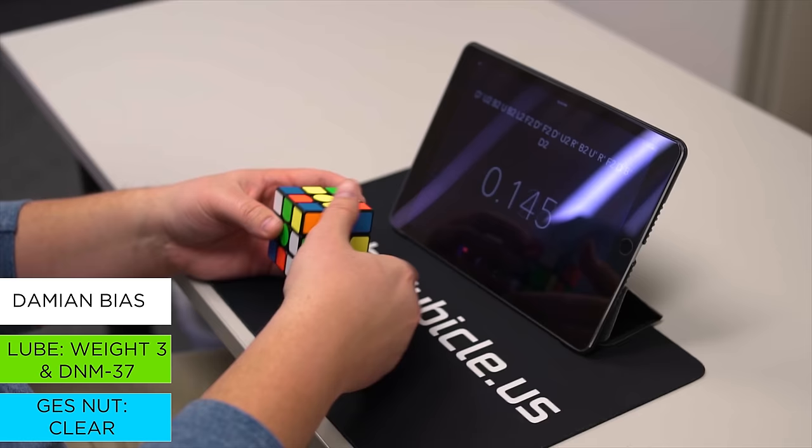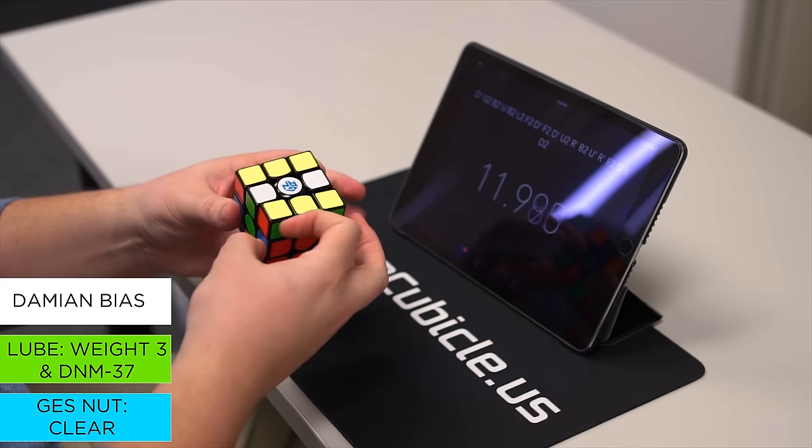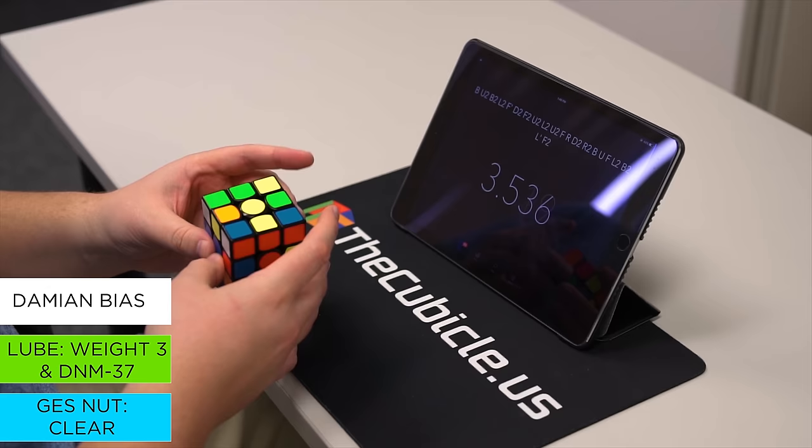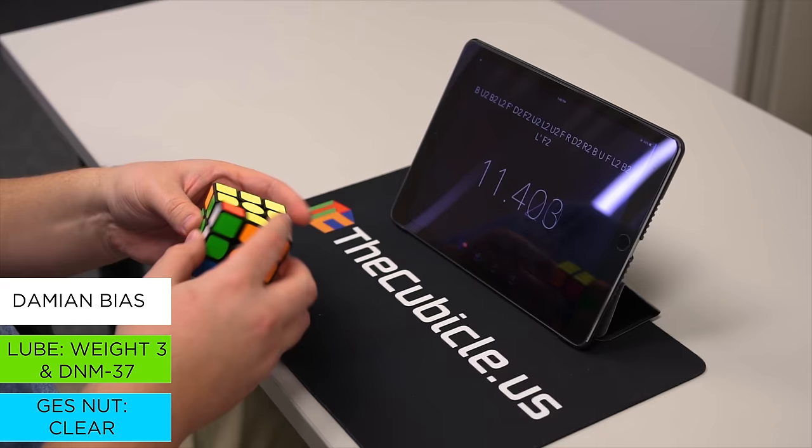But once I got my own version of the puzzle, and had a chance to play around with the different types of GES nuts, I found a setup that I really enjoyed solving. And after trying a few different sets, I've settled on the clear GES nuts. This, combined with weight 3 on the tracks, and DNM 37 on the pieces, makes this puzzle fit my turning style perfectly. And after all of that, I can comfortably say that this puzzle is now my main 3x3.